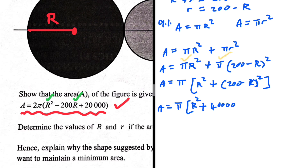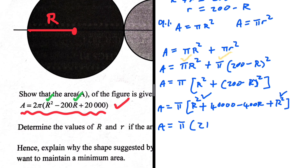200 multiplied by 200 gives us 40,000. Then 200 multiplied by minus R is minus 200R; multiply that by 2 and you get minus 400R. And minus R multiplied by minus R gives R². So expanding (200 minus R)² gives 40,000 minus 400R plus R².